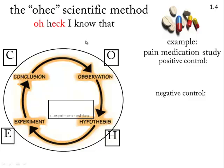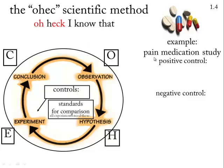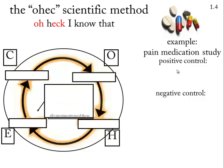All experiments need something to compare them to. That means you really better have a control — a standard for comparison. For example, suppose you're coming up with a pain medication. You better see how that thing is doing. To do it well, you could compare it to something with a known result, like a benchmark.